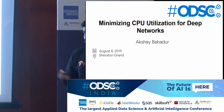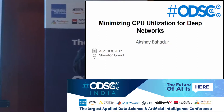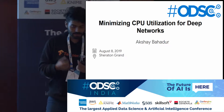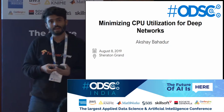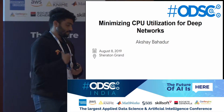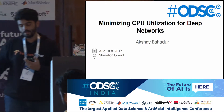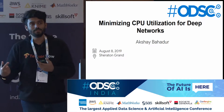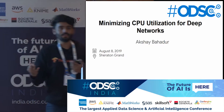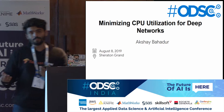The topic for this session is minimizing CPU utilization for deep networks. It's not just about CPUs — it's about how we can minimize the resources we have while training a network. To understand why I picked this topic, we have to go back and see where I come from.